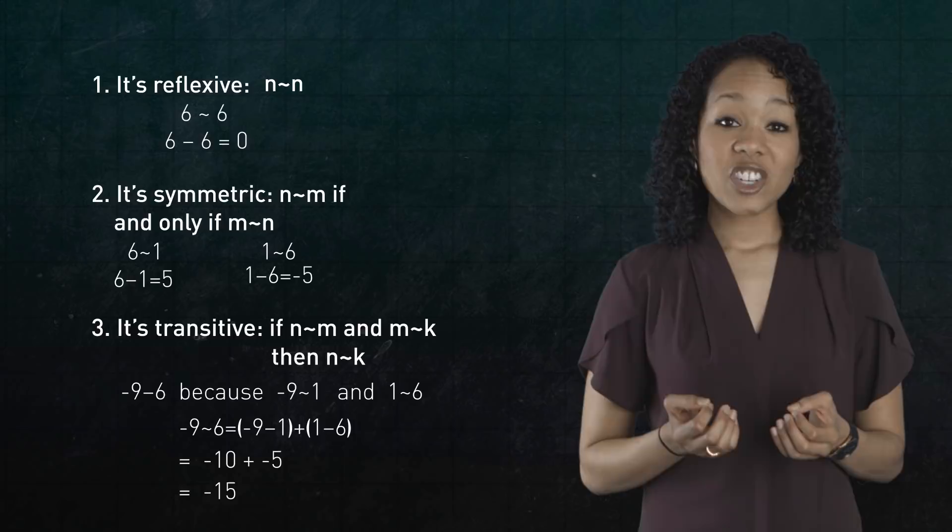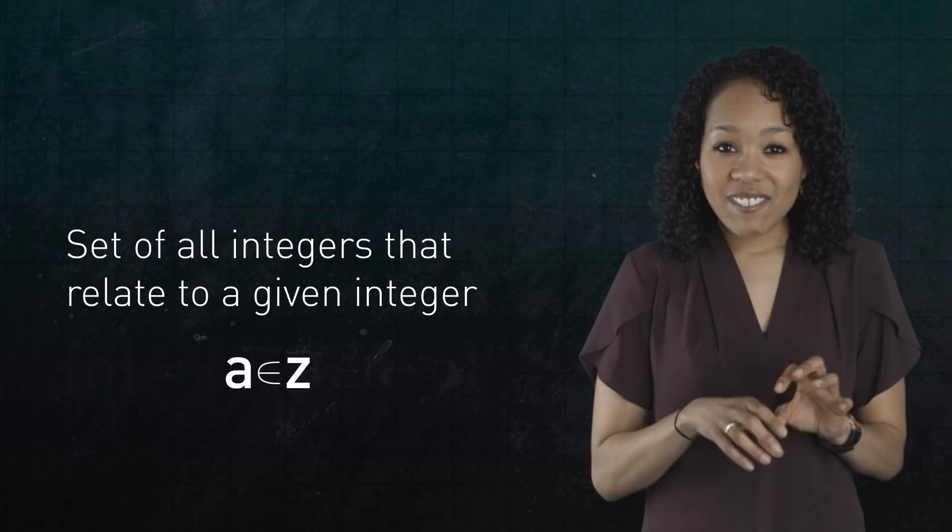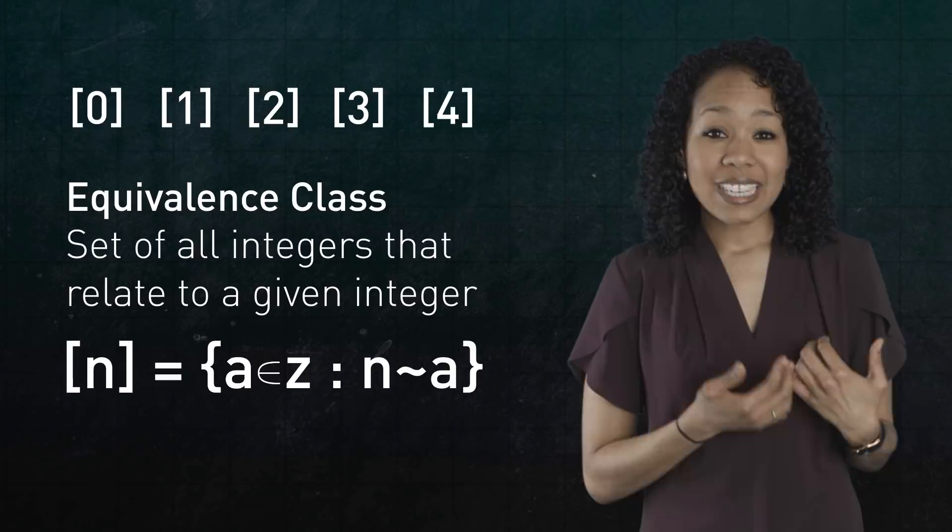Because these three properties are satisfied, the relation is called an equivalence relation. And the set of all integers that relate to a given integer is called an equivalence class or congruence class. So what we were labeling as boxes are really equivalence classes.